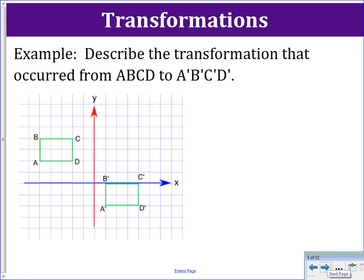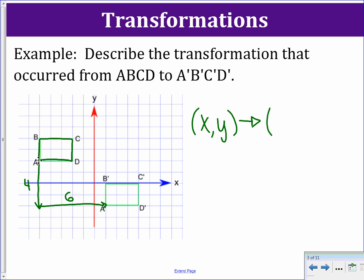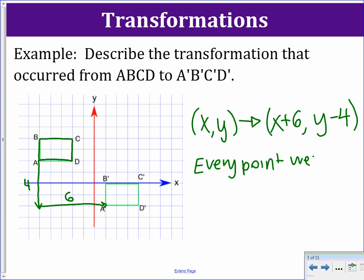Here is an example of a translation. Describe the transformation that occurred from ABCD to A'B'C'D'. To get from A to A prime, we count down 4 and to the right 6. So we go down 4 and right 6. This means we took point (x, y) and added 6 to x and subtracted 4 from y. Every point in ABCD went right 6 and down 4.